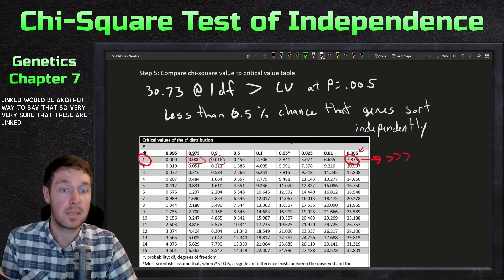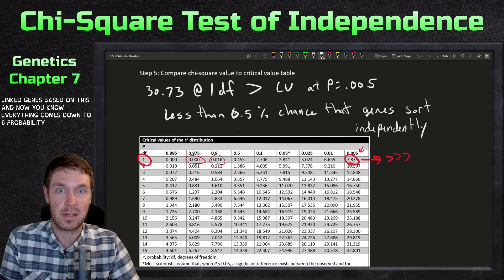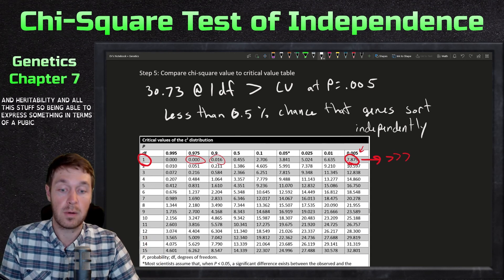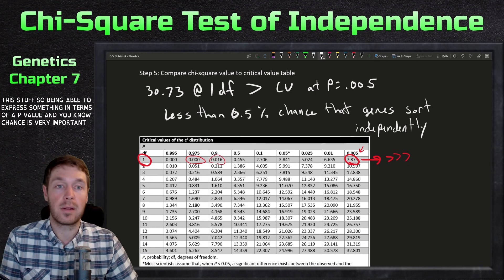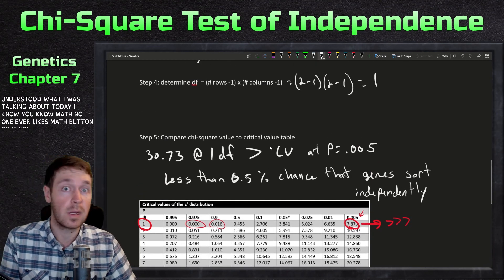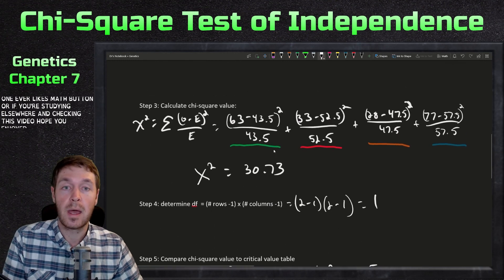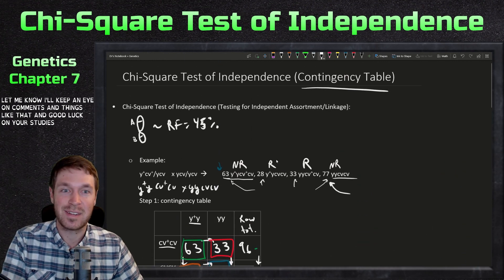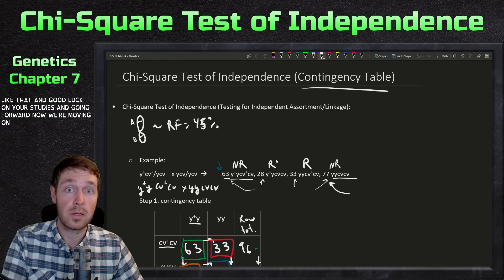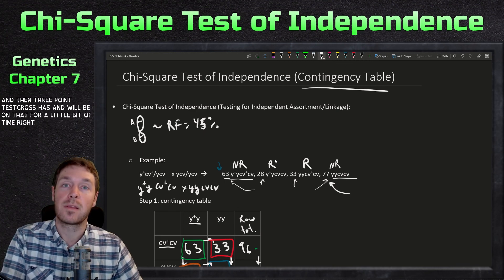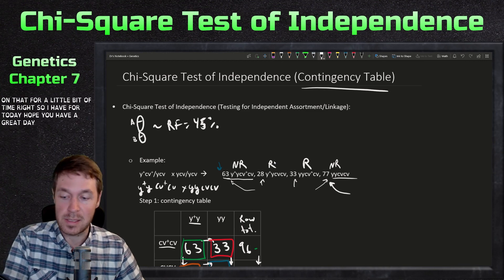Everything comes down to probability and statistics in genetics and heritability, so being able to express results in terms of a p-value is very important. I hope you understood what I was talking about today — math is never everyone's favorite, but I hope it was helpful. If you have any questions, let me know in the comments and good luck on your studies. Next we'll be moving into genetic mapping with linked genes — two-point test crosses first, then three-point test crosses. Have a great day, see you next time!